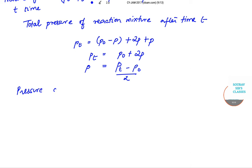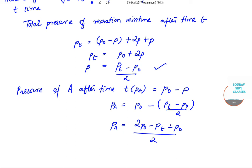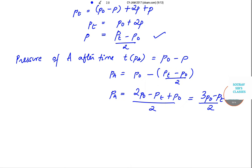So pressure of A after time T, PA, is equal to P naught minus Pt minus P naught by 2. This I am writing within brackets so that it becomes simple. So let us take the LCM. It becomes 3P0 minus Pt by 2. This is the value of PA.